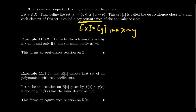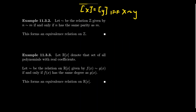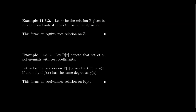Let's look at some examples of equivalence classes. A very simple one is the parity relation. Take the integers Z — positive, negative, and zero — and define a relation: n ~ m if and only if n and m have the same parity. This forms an equivalence relation.